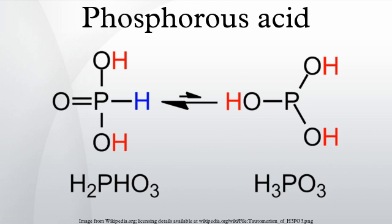The P(OH)3 tautomer has been observed as a ligand bonded to molybdenum. Other important oxyacids of phosphorus are phosphoric acid and hypophosphorous acid. The reduced phosphorus acids are subject to similar tautomerism involving shifts of H between O and P.